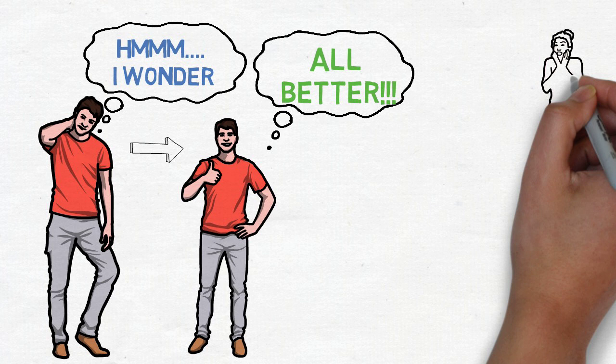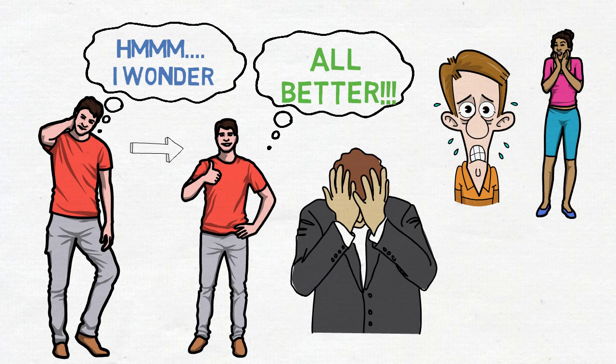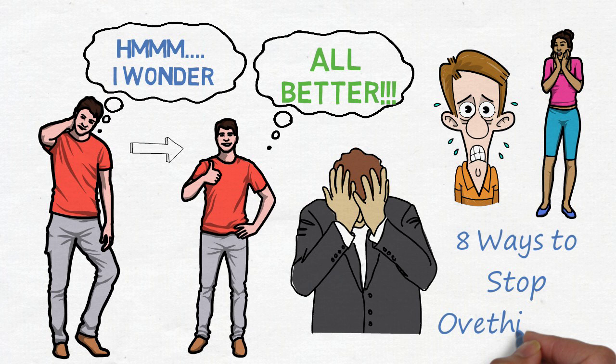The only thing that comes from overthinking the events yet to come is incessant worry, and dwelling on the events that have already passed is ruminating. Neither is overly healthy or productive. If you find yourself overthinking things and being stuck in either mode of worrying or ruminating, continue watching for 8 ways to break the cycle and get back to living.